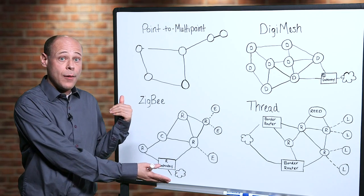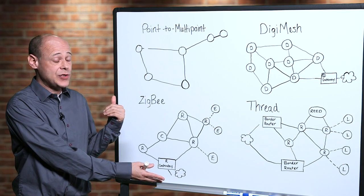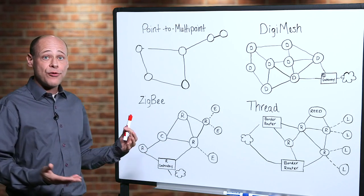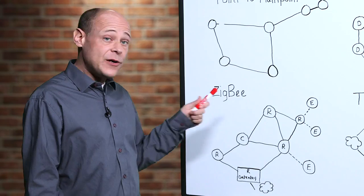You may notice that there are multiple different types of mesh networks. We have three on the board here, and I'm going to go through them one by one. The first is Zigbee.